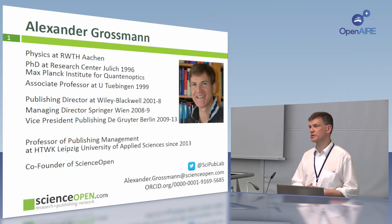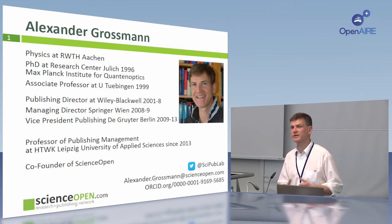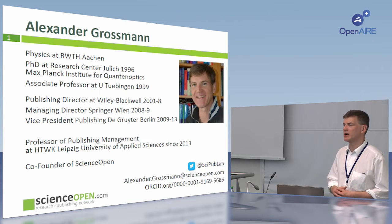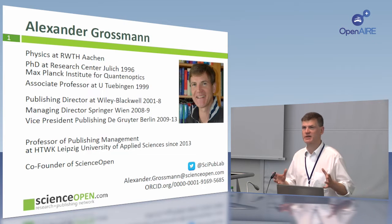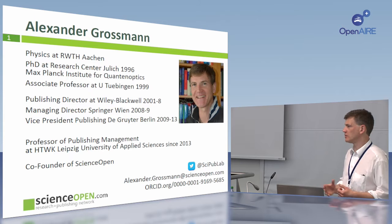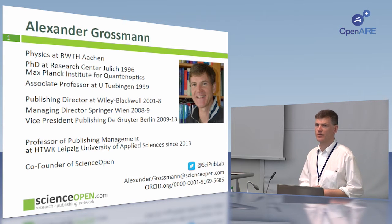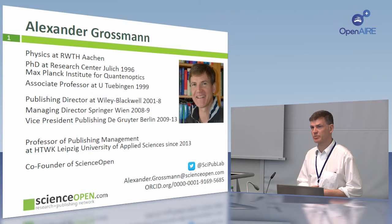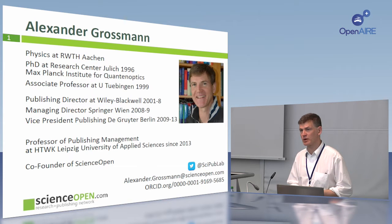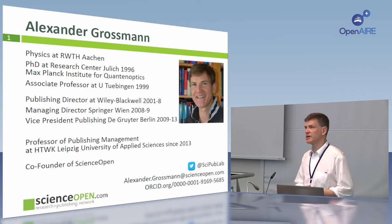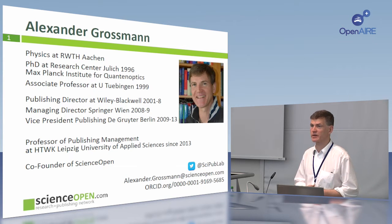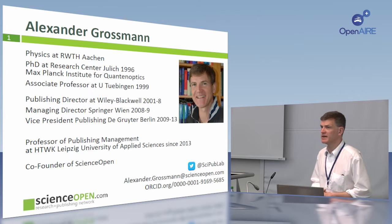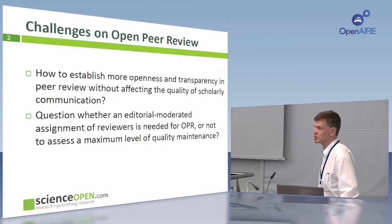Just half an hour ago, Josh explained very accurately how post-publication peer review could work, with more transparency in scholarly communication. This was part of Science Open, which I launched with a partner in Boston three years ago. We are ready to find out more about the opportunities — not only for publishing and scholarly communication, but also for more transparency in the quality assessment of scholarly communication, which is the topic of our panel discussion today. That's why I want to ask two questions.